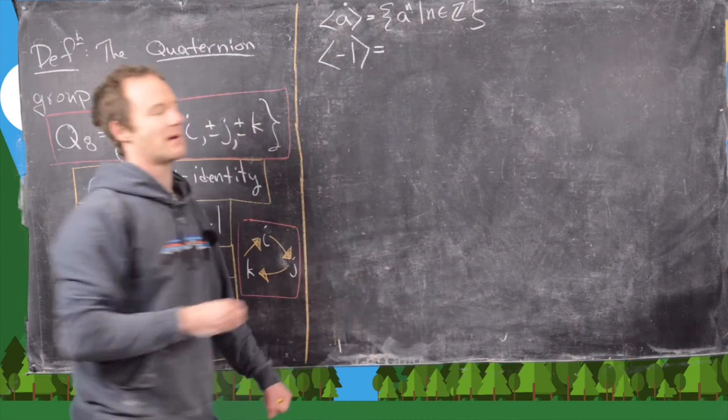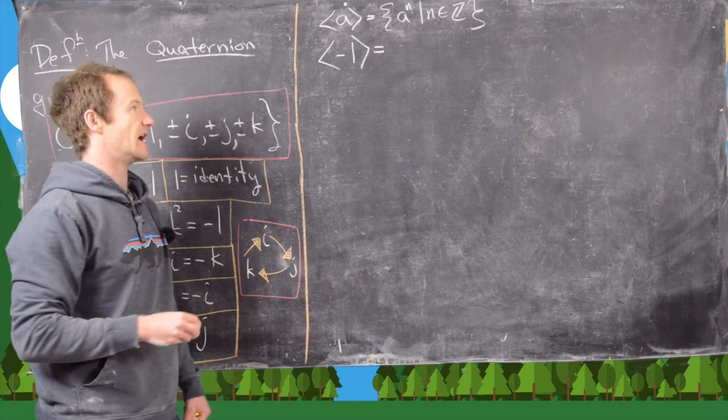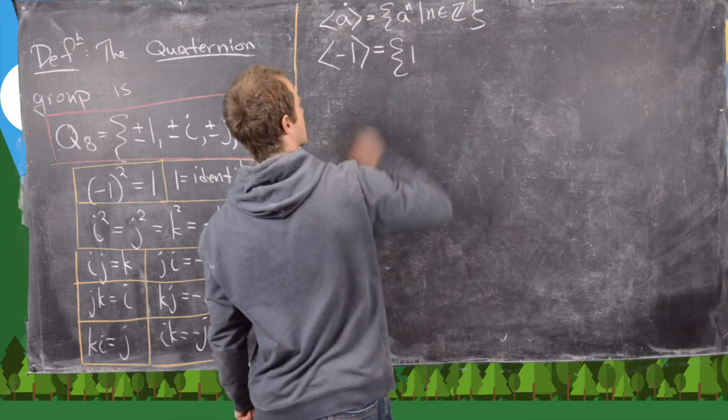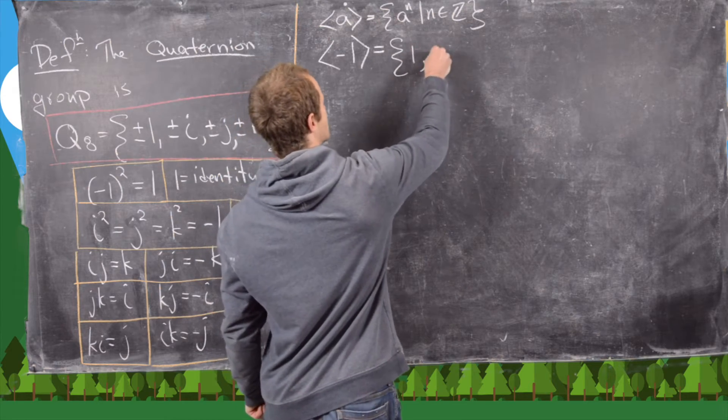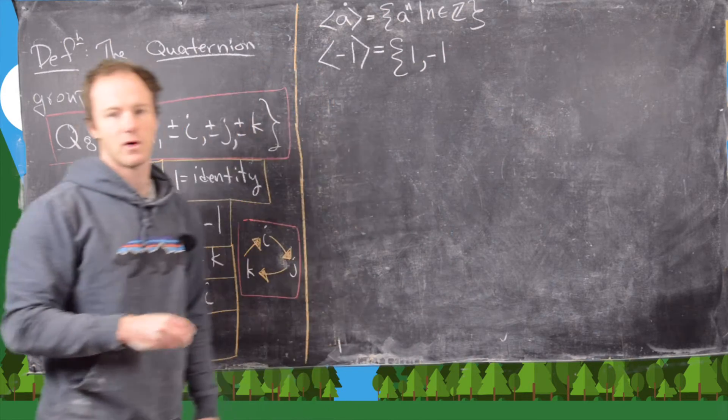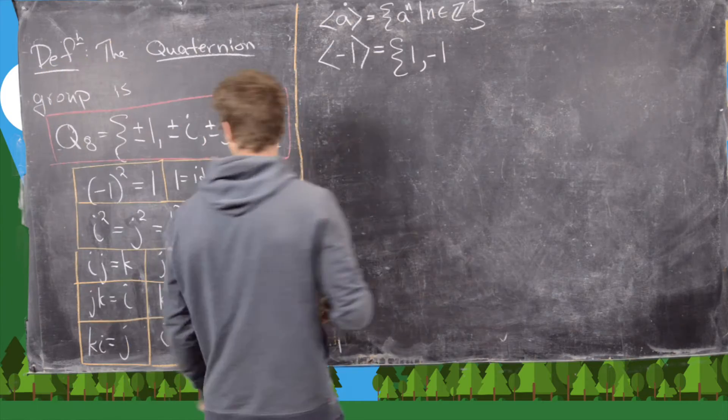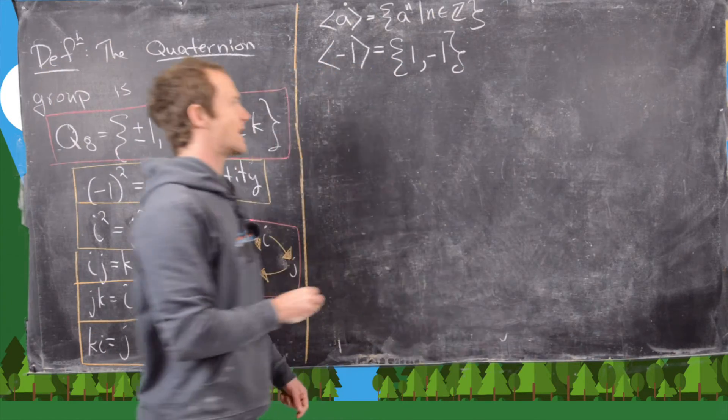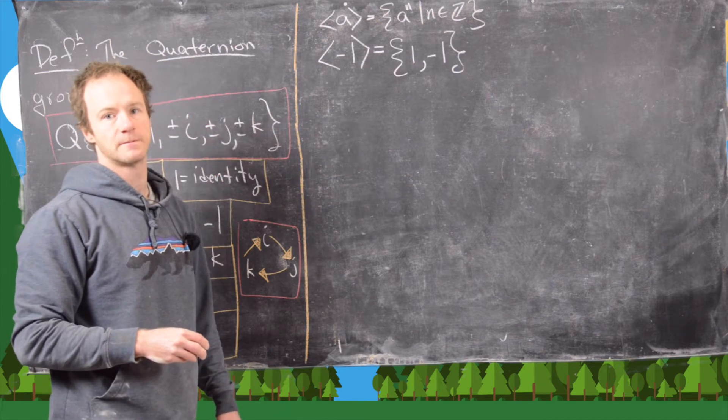So that means here we need minus 1 to the 0th power, which is going to be 1, minus 1 to the 1st power, which is negative 1, and then minus 1 squared, which puts us back at positive 1. So that means here we have just a group of order 2.